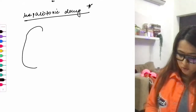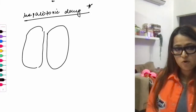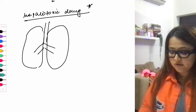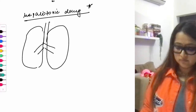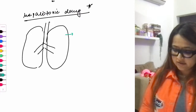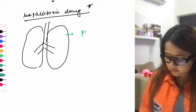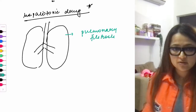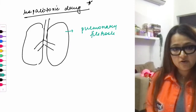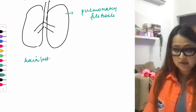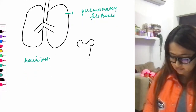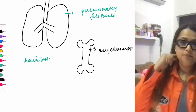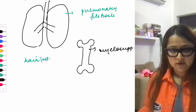Methotrexate can also cause pulmonary fibrosis, hair loss (alopecia), and myelosuppression — bone marrow suppression. Since it is antifolate, you give leucovorin rescue therapy along with it. Remember these important side effects of methotrexate.